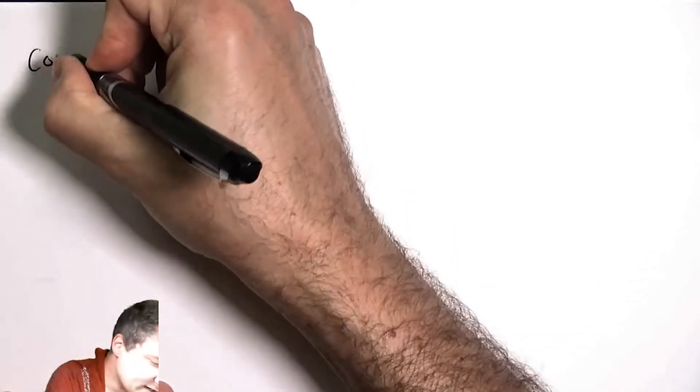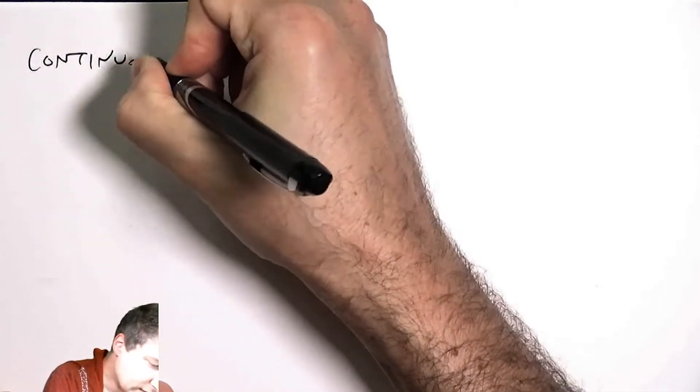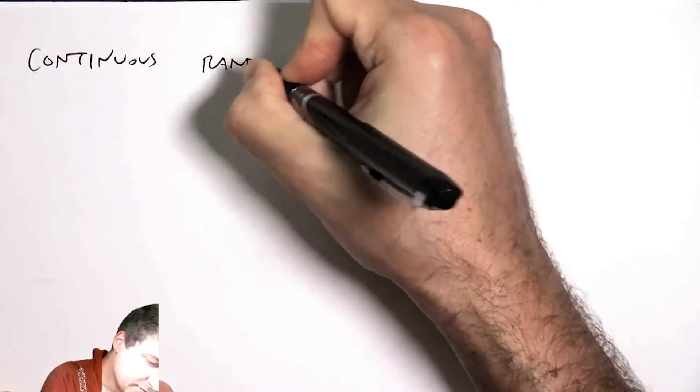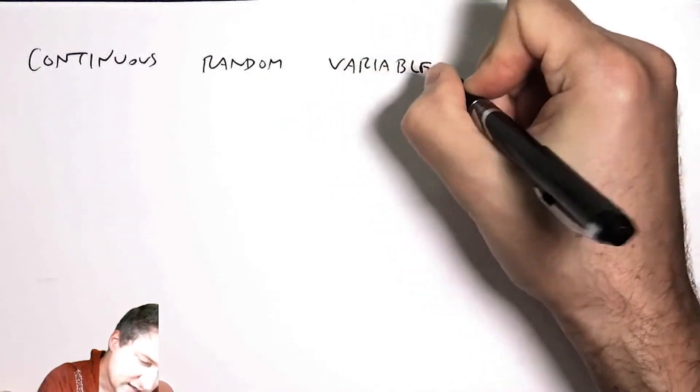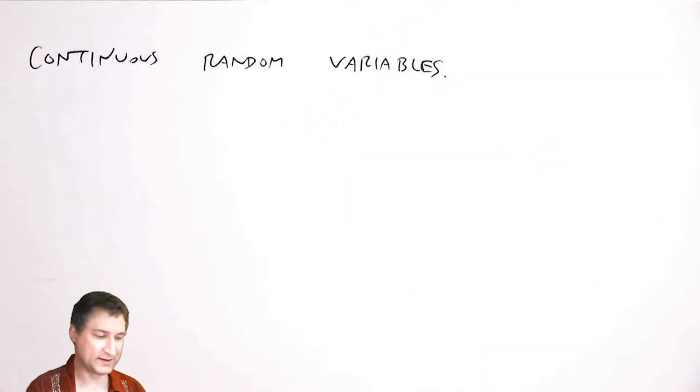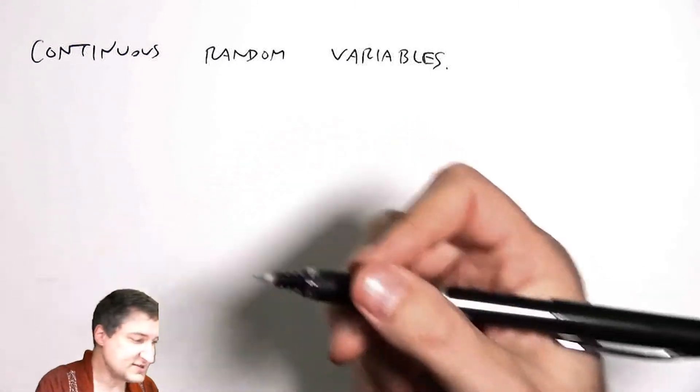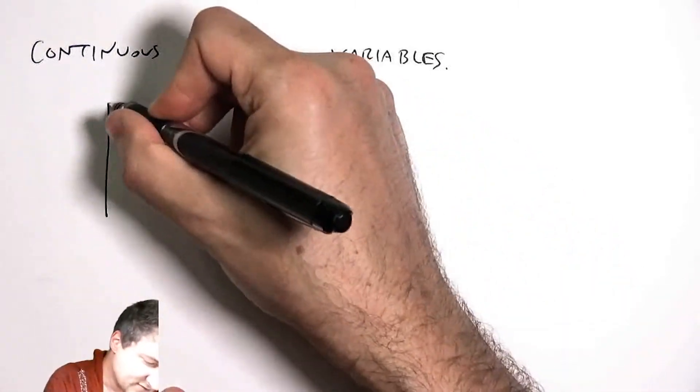Okay, so we talked a little bit about continuous random variables earlier, but now we're really in a position to define these things concretely and mathematically. And the tool we're going to use is the CDF that we talked about in the previous lesson.